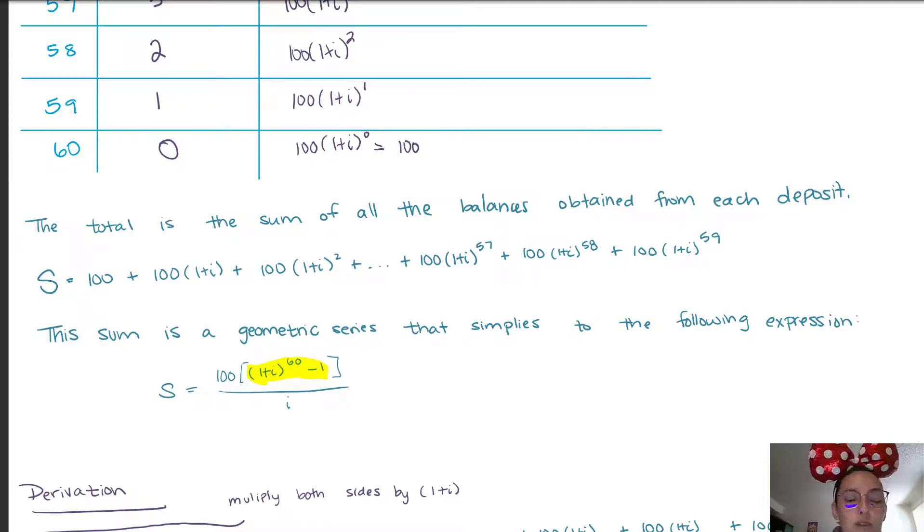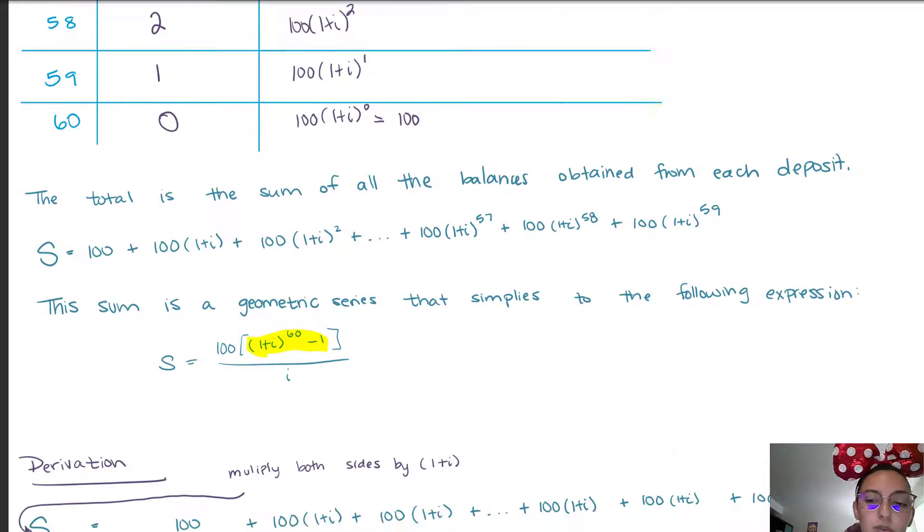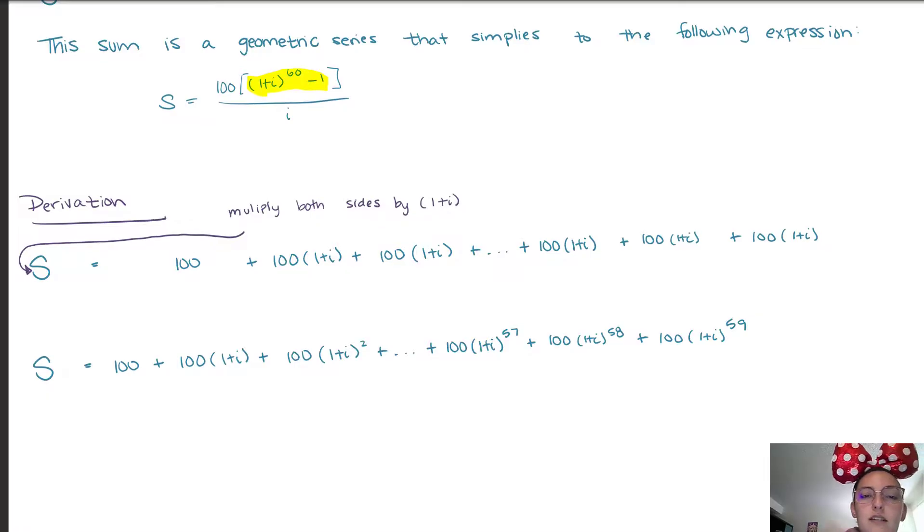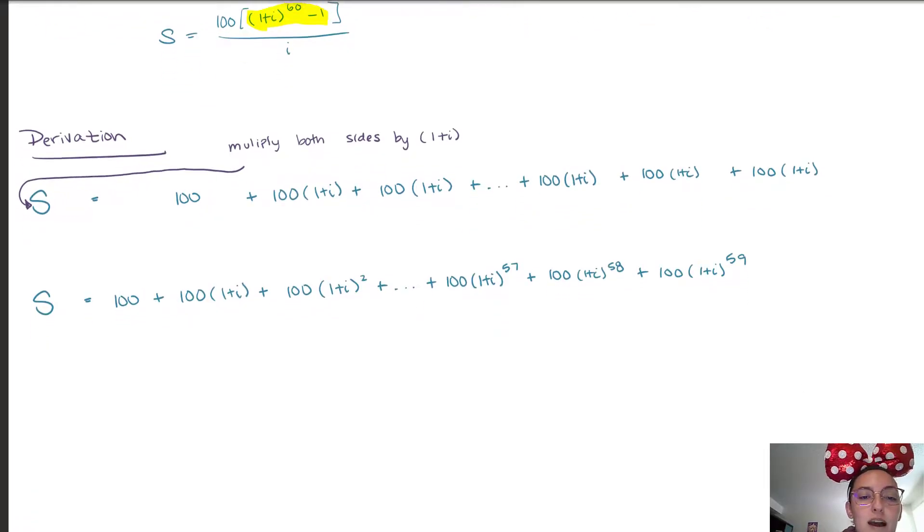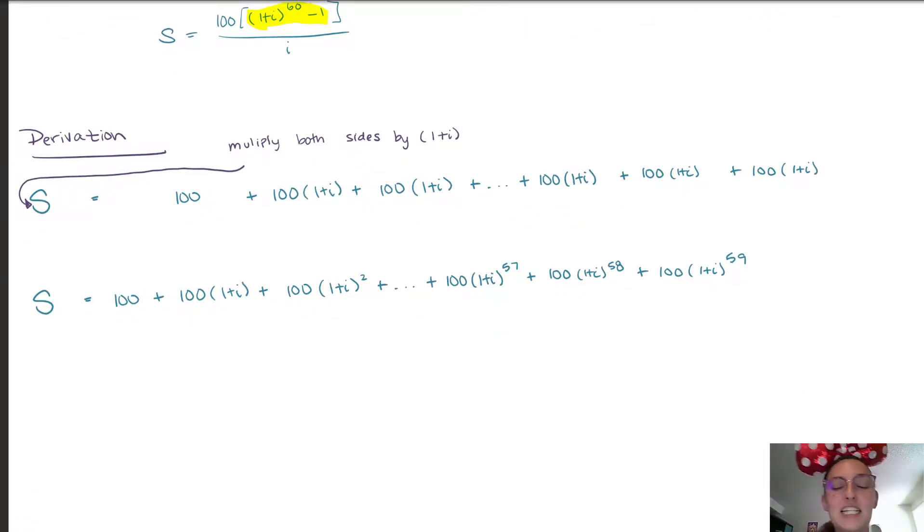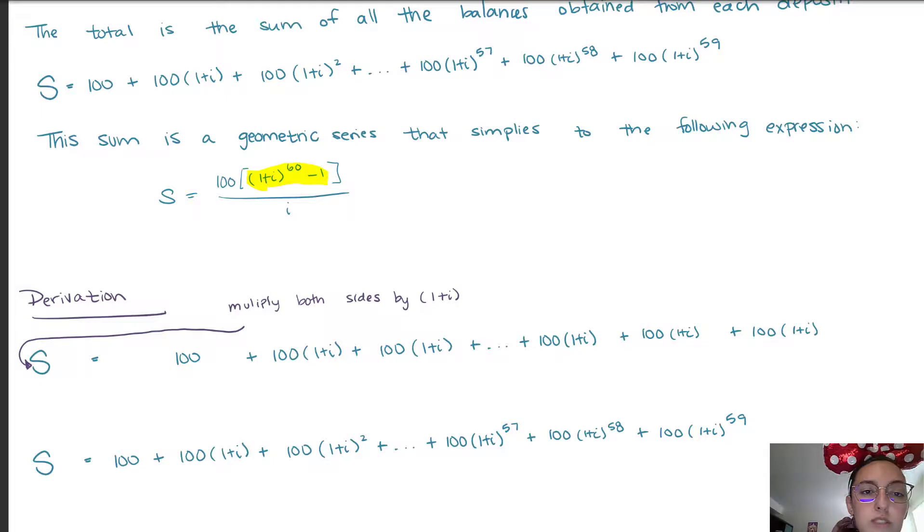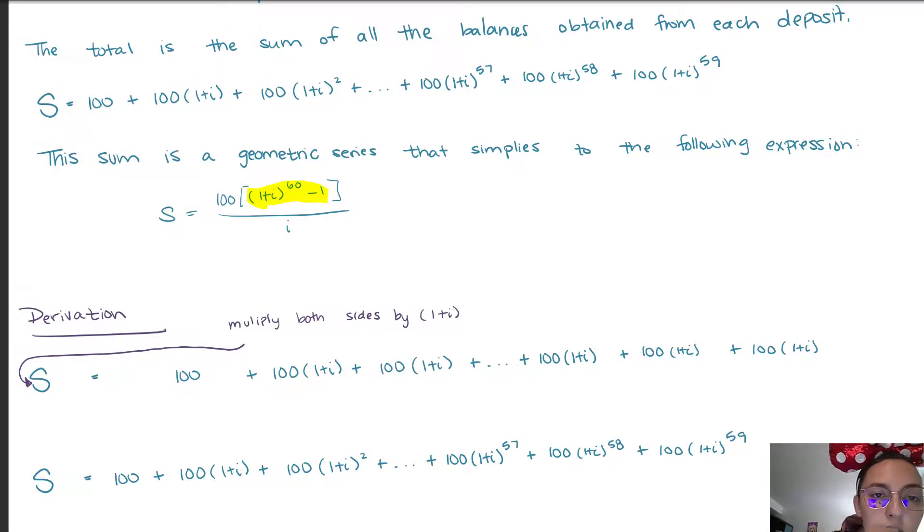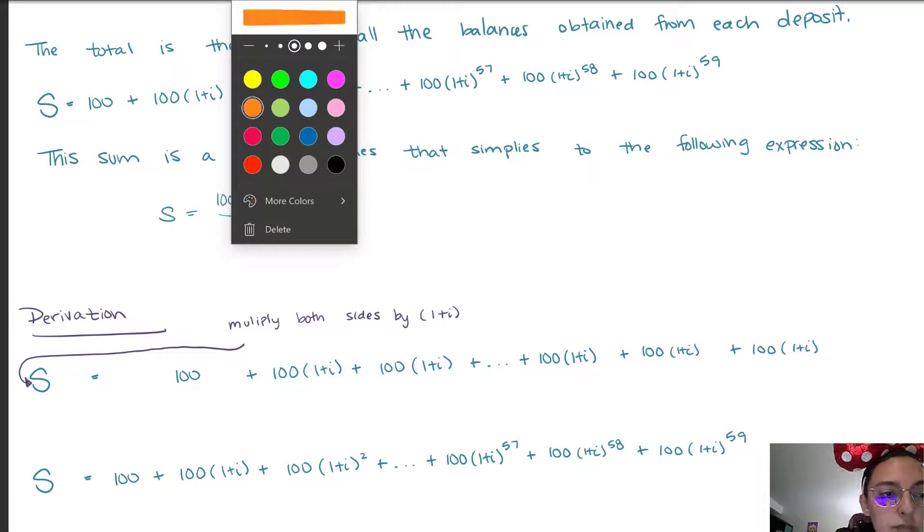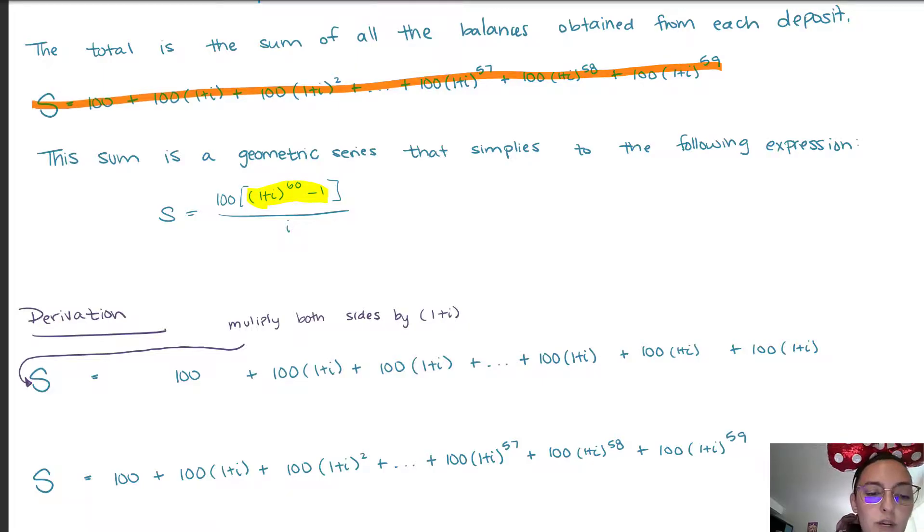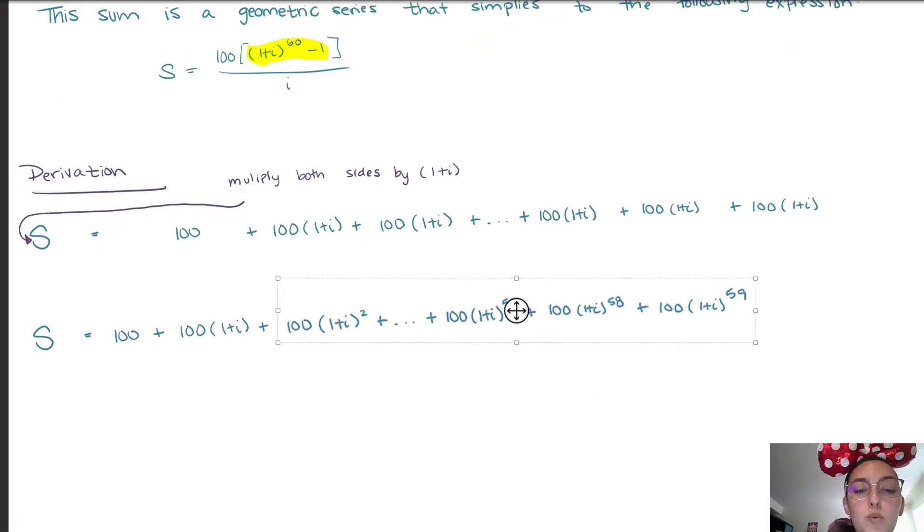Now to derive our rule we're going to use a technique that is often used in math. What we're going to do is we're going to make two copies of the total sum equation highlighted here in orange. We're going to take two copies of this equation, and to one of those copies, to this first copy, we're going to multiply both sides by 1 plus I.